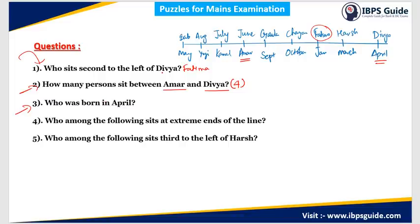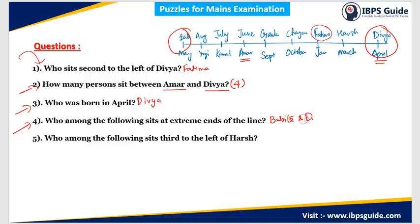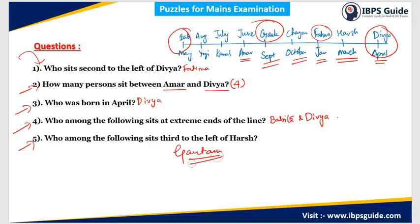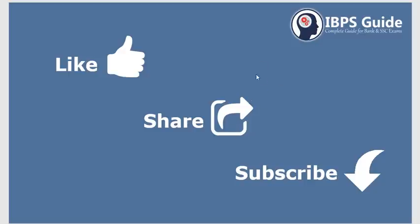Question 3: who was born in April? Looking at the arrangement, Divya is born in April. Question 4: who sits at the extreme ends of the line? Bhavita and Divya sit at the extreme ends. Question 5: who sits third to the left of Harsh? Counting three positions to the left of Harsh, the answer is Gautam. With that, this lecture is concluded. If you like this video, please like, share, and subscribe to IVPS guide. For all information about the test series, check out the description. Thank you.